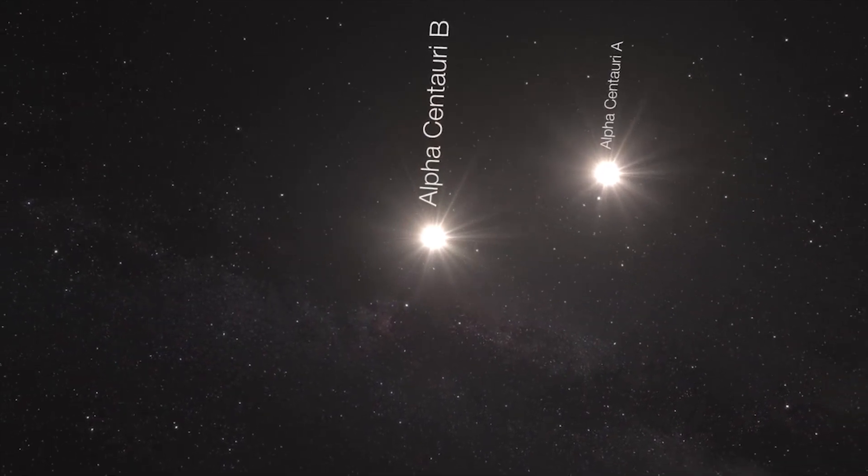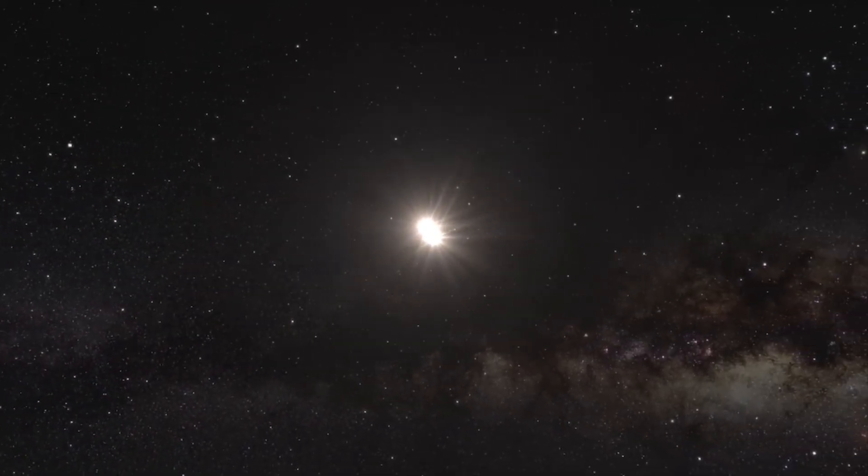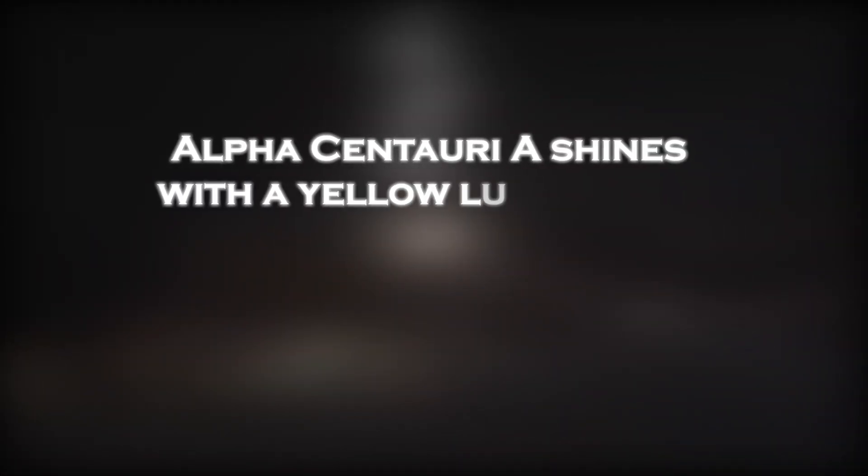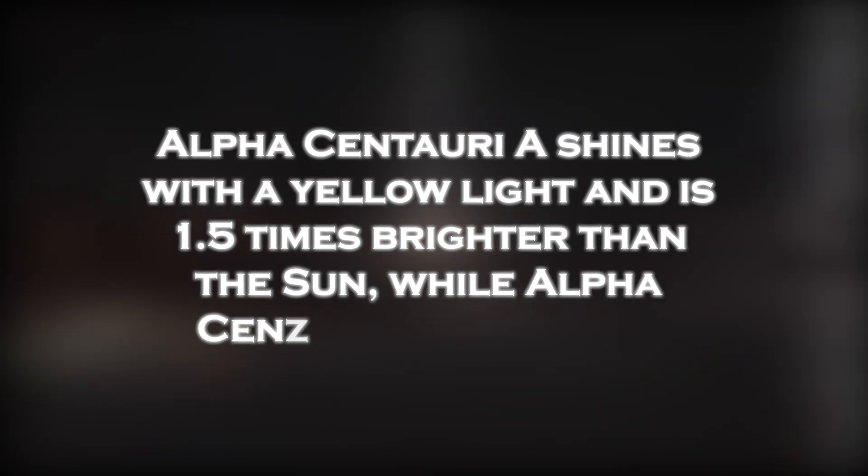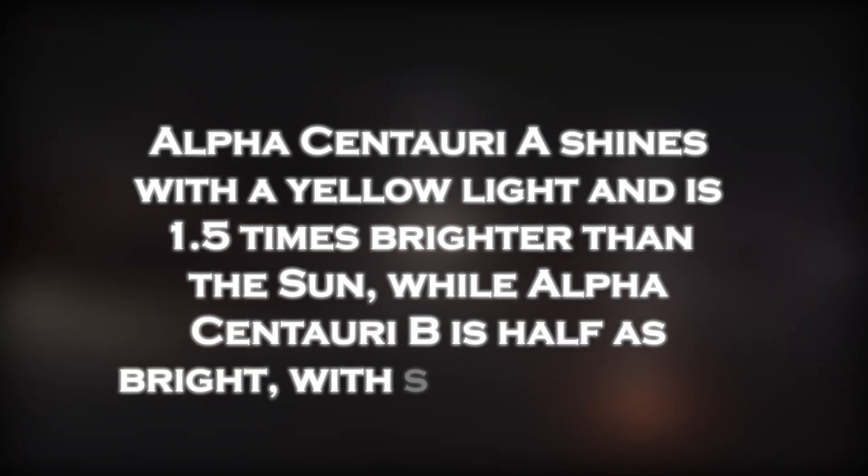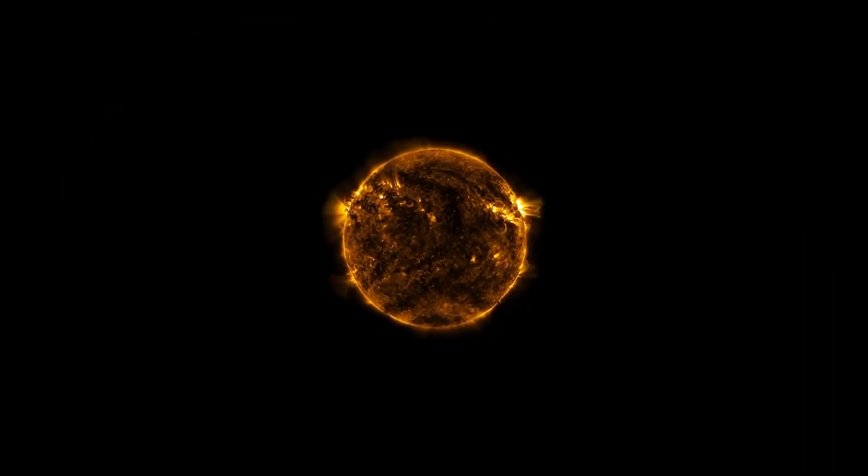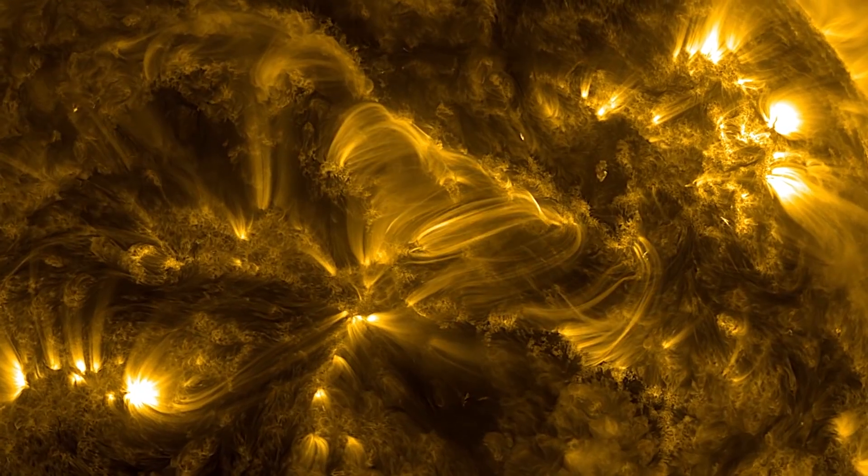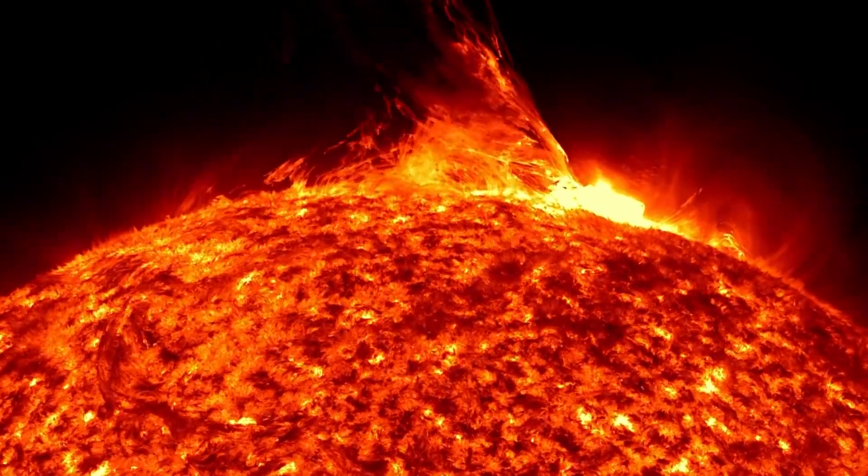Alpha Centauri A and B, the two stellar companions, are relatively close to each other and are quite similar to the Sun. Alpha Centauri A shines with a yellow light and is 1.5 times brighter than the Sun, while Alpha Centauri B is half as bright with an orange hue. Alpha Centauri A is slightly larger than our Sun. Alpha Centauri B is also smaller, so our Sun fits exactly between them in size.